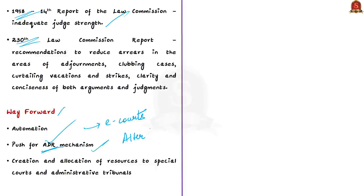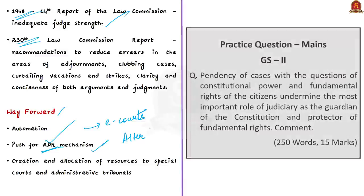Additionally, rationalization is needed in the creation and allocation of resources to special courts and administrative tribunals so they can function efficiently. The author's point is that for the judicial organ to guard the Constitution and protect fundamental rights of citizens, it is important to look into the impediments causing pendency of cases and provide solutions to overcome them. This discussion covered pendency of cases involving constitutional questions, consequences of such pendency, and possible solutions.